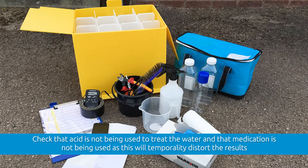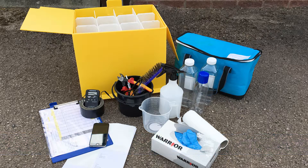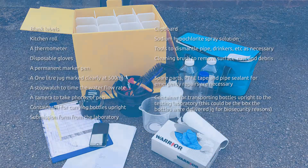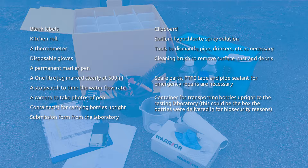Before you start, you will need to organise the correct equipment. You will need the items shown on the screen now. Some examples include sterile sample bottles, disposable gloves and labels.